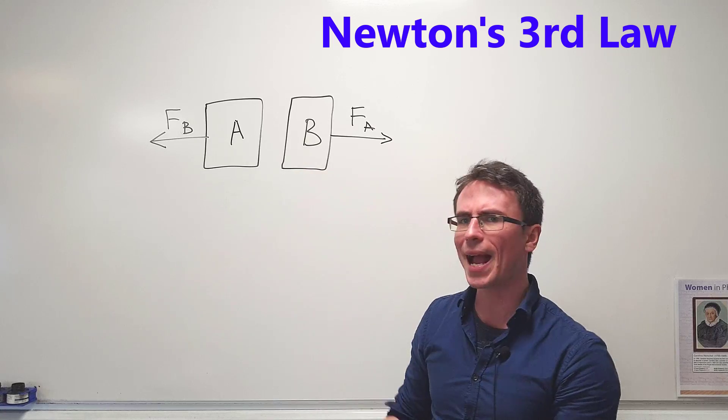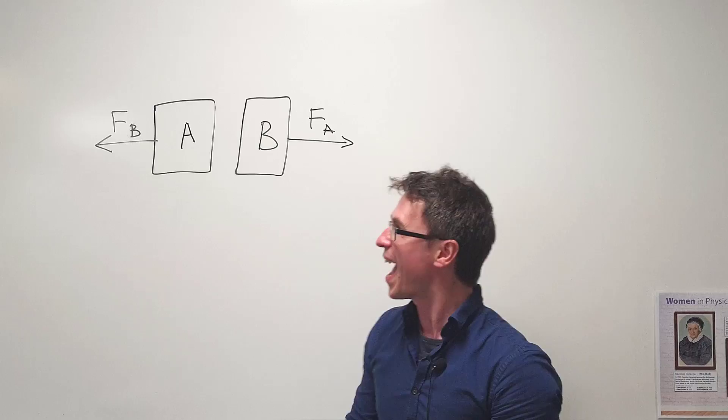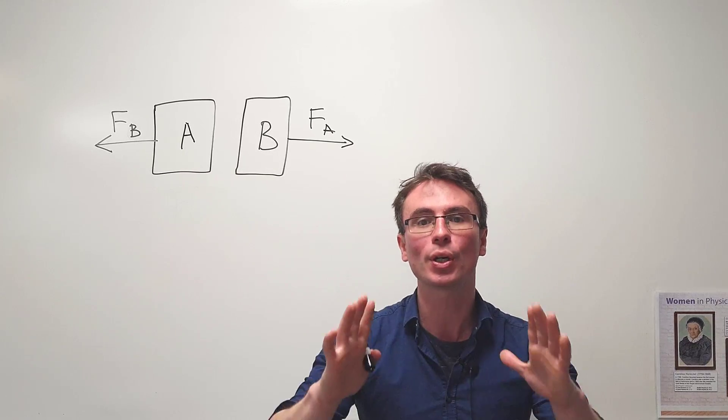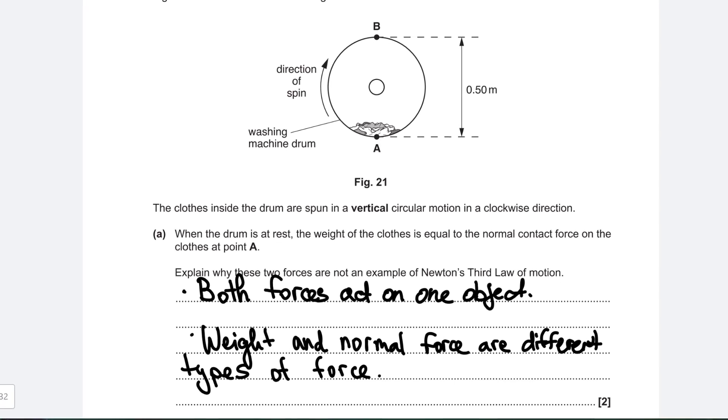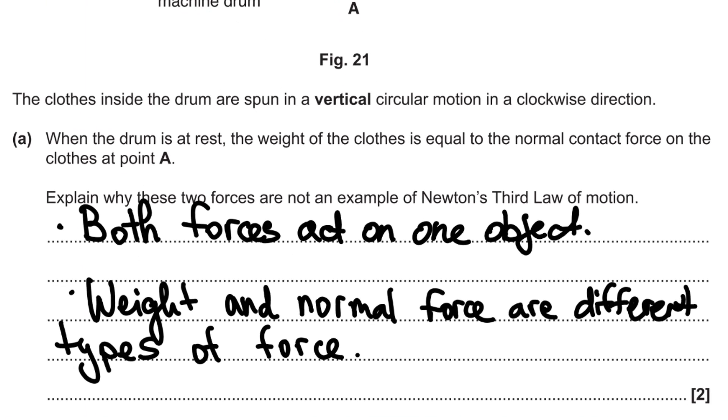When two objects interact they exert equal and opposite forces on each other and those two forces are acting on two separate objects. In this example though both forces act on one object only and hence this is not an example of Newton's third law. Both of these forces need to be of the same type.